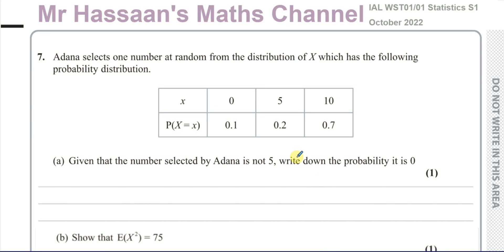Okay, welcome back. This is Mr. Hassan's Math Channel. I'm now answering question number seven, which is the last question from this S1, Statistics S1, October 2022 International A-Level at Excel paper. This question is about discrete random variables.